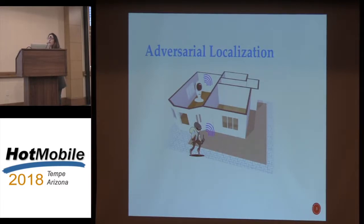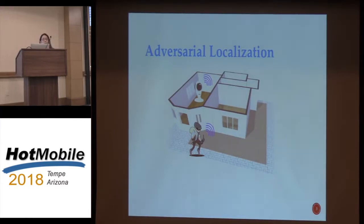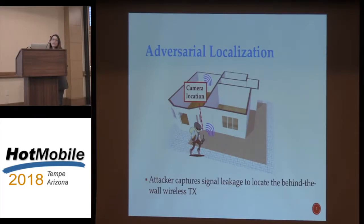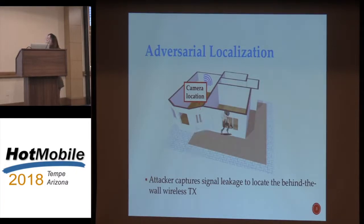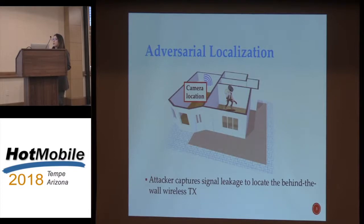For wireless devices, one key vulnerability comes from signal leakage. The attacker can capture signals and do something bad. In this paper, we focus on remote localization by external attackers, which we call adversarial localization. Basically, the attacker will sniff the wireless transmissions and locate the target device, for example the wireless camera. In this way, a home burglar is able to avoid the presence of cameras and plan his intrusion. Clearly, this will be very bad for home security.